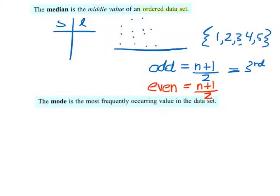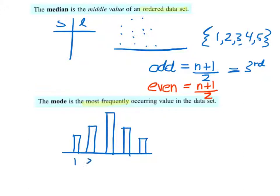The mode is the most frequently occurring value in a data set. If we have a column graph with frequencies on the y-axis and data values on the x-axis, the mode is the most frequently occurring data value or the tallest column. In this case, it's three.